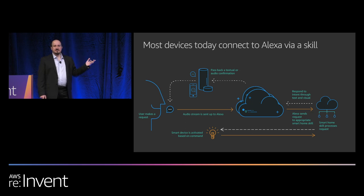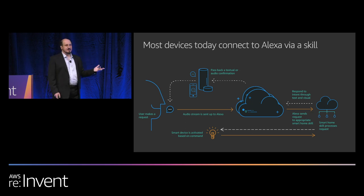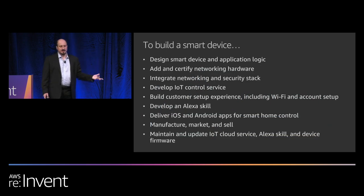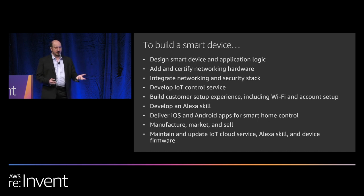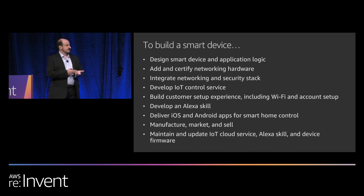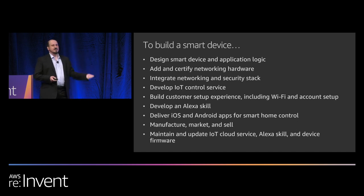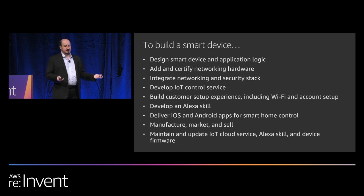If you look at that flow, even from a bird's eye view, that's a lot of infrastructure in the mix. To build a smart device, the manufacturer needs to think about how to add connectivity hardware, how to design the setup experience, build Alexa apps, create cloud infrastructure, develop an Alexa skill, think about features like OTA updates, and after all this, maintain them.